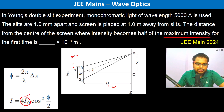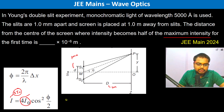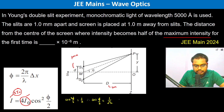Half of the maximum intensity means I becomes 2I₀. So from the intensity formula I = 4I₀cos²(φ/2), we get cos²(φ/2) = 1/2. Therefore cos(φ/2) = 1/√2, which gives φ/2 = π/4.